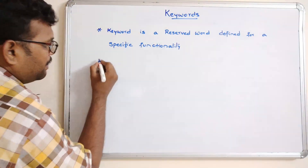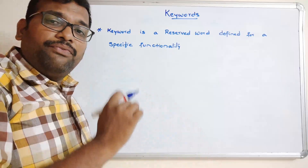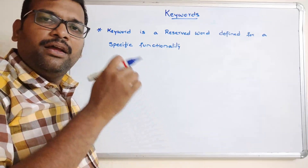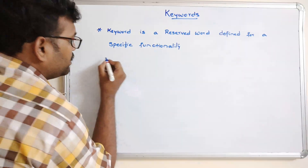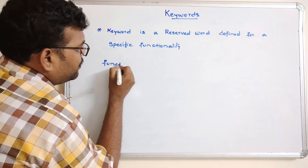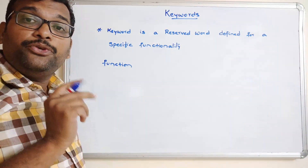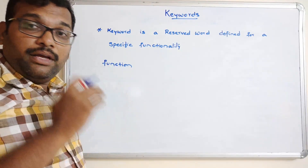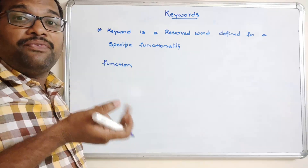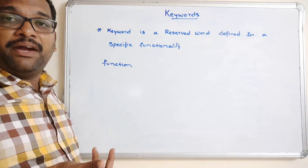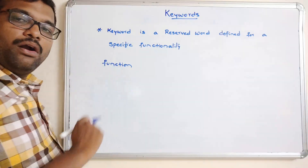Now I'll list out the keywords. This is an abstract view, and everything in depth you will understand when we move on with the concepts. For example, there is a keyword called 'function'. This keyword is used to define user-defined functions. In our previous session we saw that R programming includes control structures and functions, and all user-defined functions should be defined with the keyword 'function'.